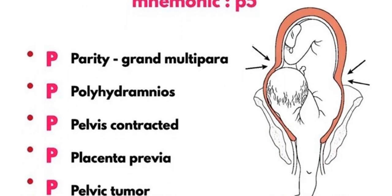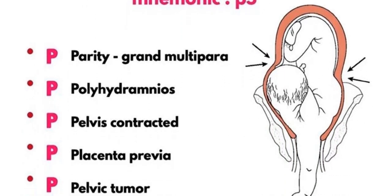The last P is pelvic tumors of the mother, which can also cause the unstable lie. So this is the five P mnemonic for the causes of unstable lie, and it is very easy to remember.